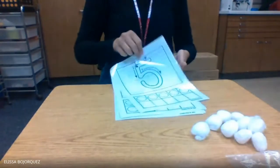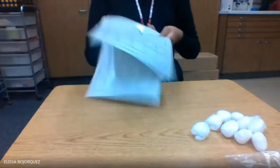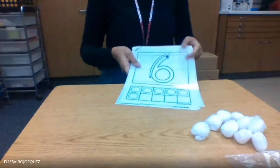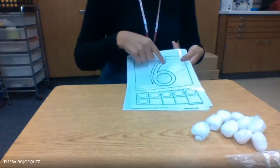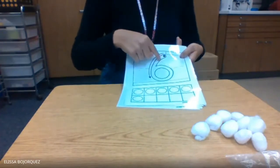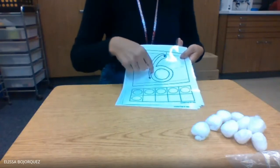Next, we could skip over to number six. And we're going to do the same thing. Use our pointing finger, start at the top, and go down and loop around for number six.